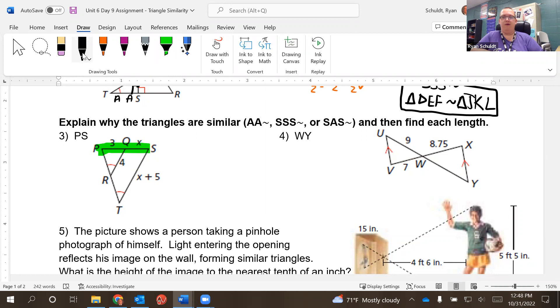Well, they share angle P, so I'm going to mark it. They tell us angle R and angle T are congruent. So these are similar by angle, angle similarity.